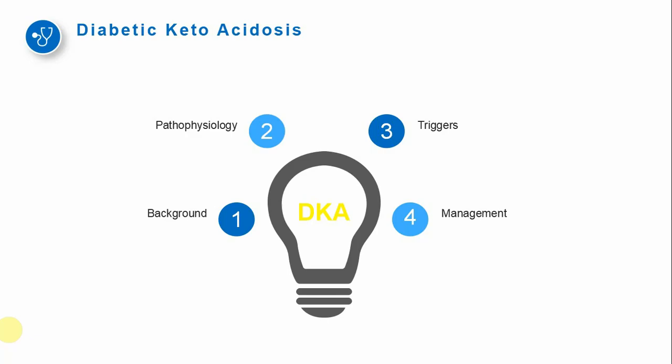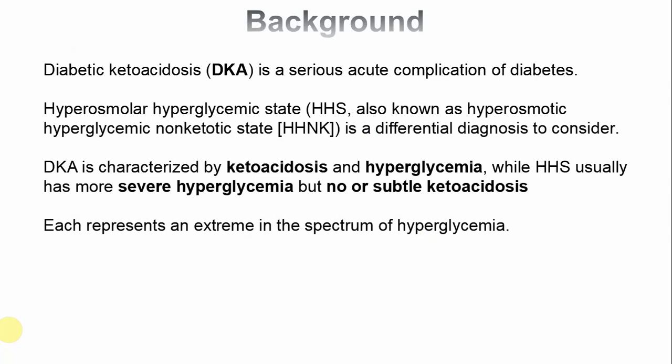Diabetic ketoacidosis is a complication of diabetes — type 1 or type 2. Whenever we talk about DKA, we also need to think about the hyperosmolar hyperglycemic state. It can be tricky to differentiate between them, but there are guidelines to help. The main difference is that there is severe ketoacidosis in DKA, whereas in HHS there may be no ketone or very little ketone present.